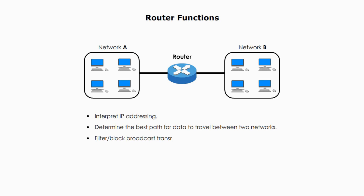Besides, a router can filter and block broadcast transmissions, which means any broadcast message will not go beyond. A router can also filter and monitor network traffic. A router can diagnose problems and trigger alarms, and so on.